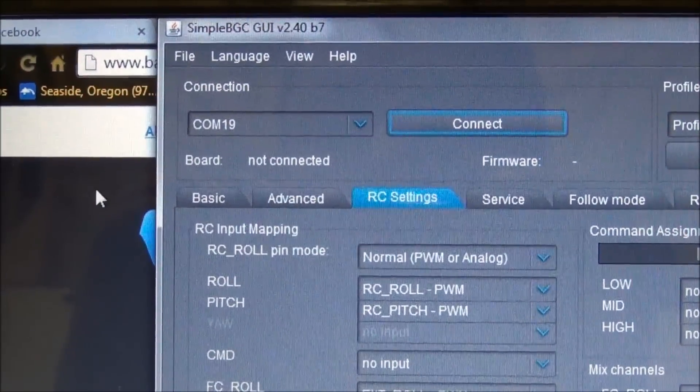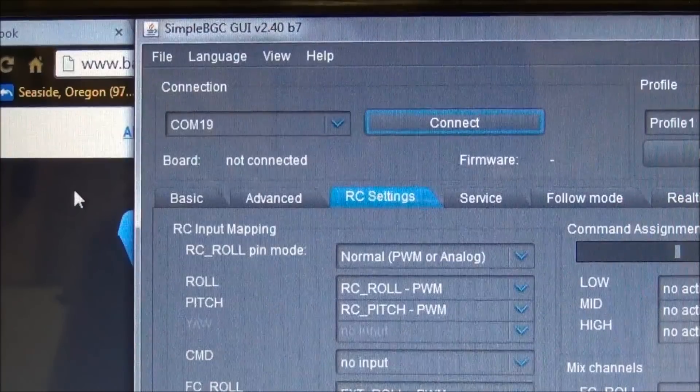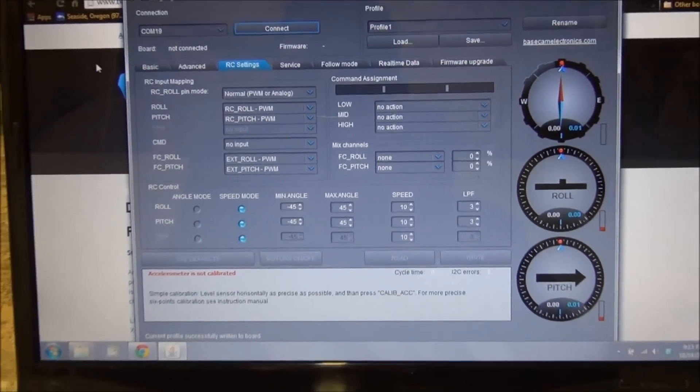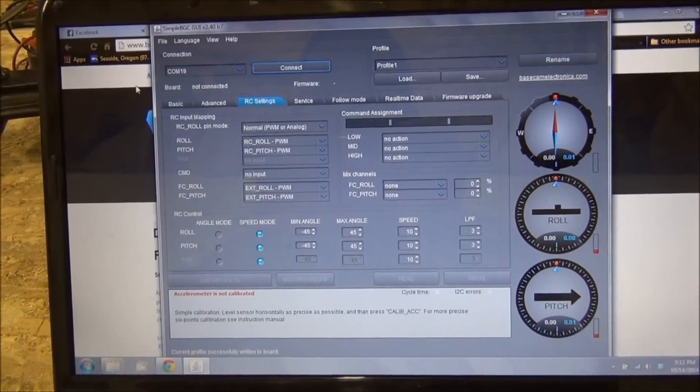I had to go to the Basecam website and download version 2.4.0 Bravo 7, and that just happens to be the latest version. For some reason, this one worked just fine. The other version did not work.